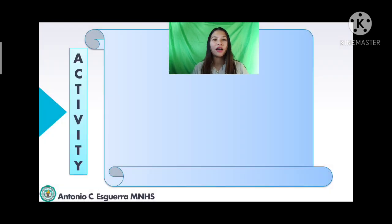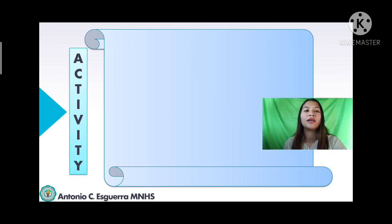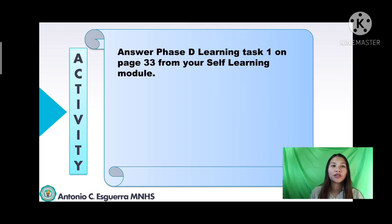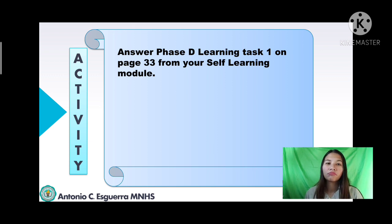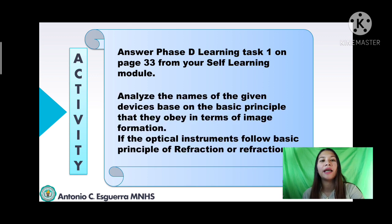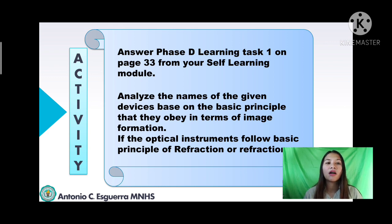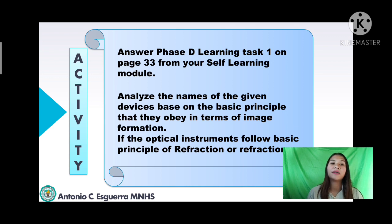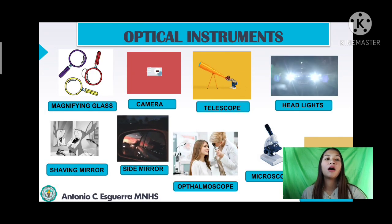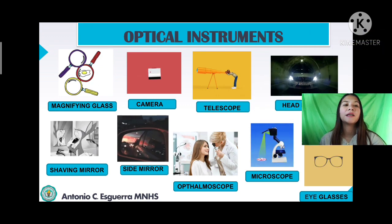Before we proceed with our lesson, let's have an activity. You're going to answer the PACE-D learning task in your Self-Learning Module on page 33. Get your module and turn to page 33. The instruction is to analyze the given devices based on the basic principle they obey in terms of image formation — whether the optical instrument follows the basic principle of reflection or refraction. These are the examples of different instruments.